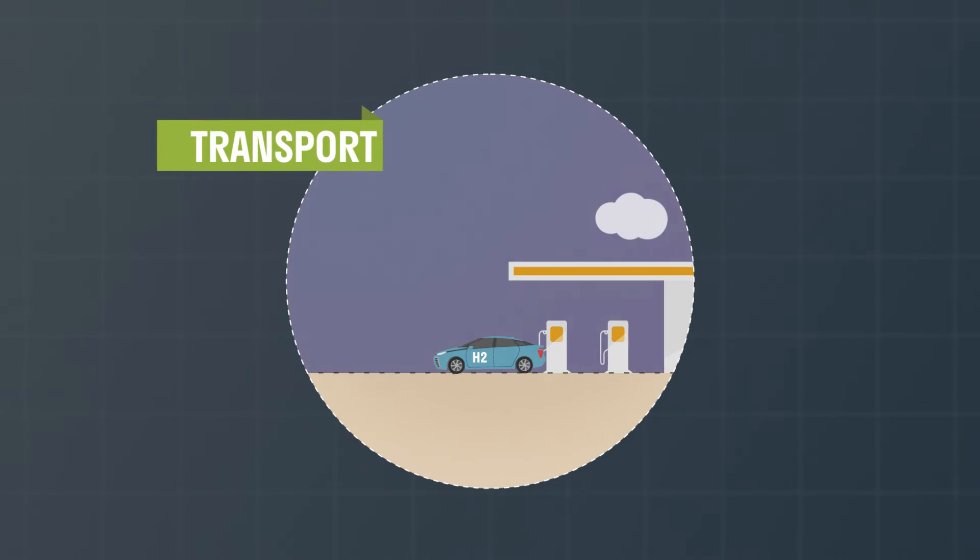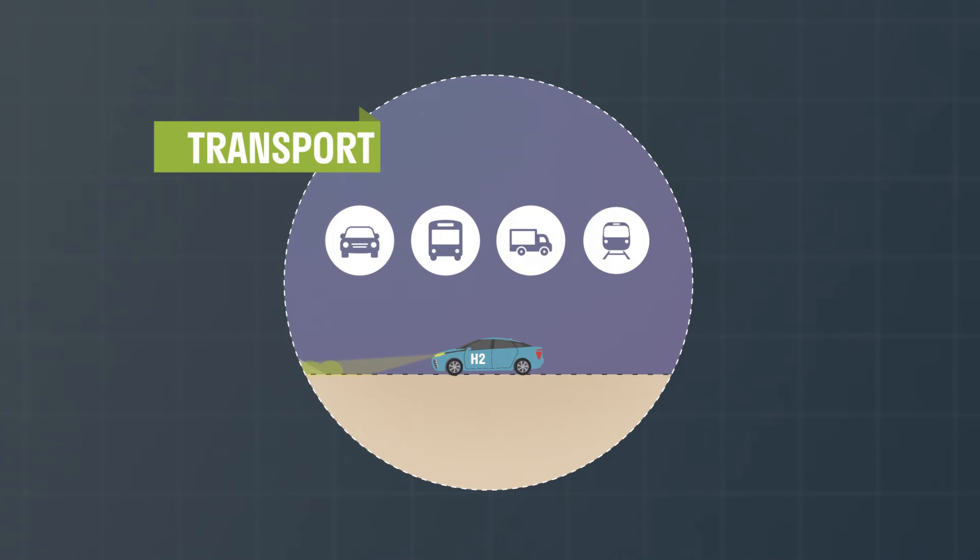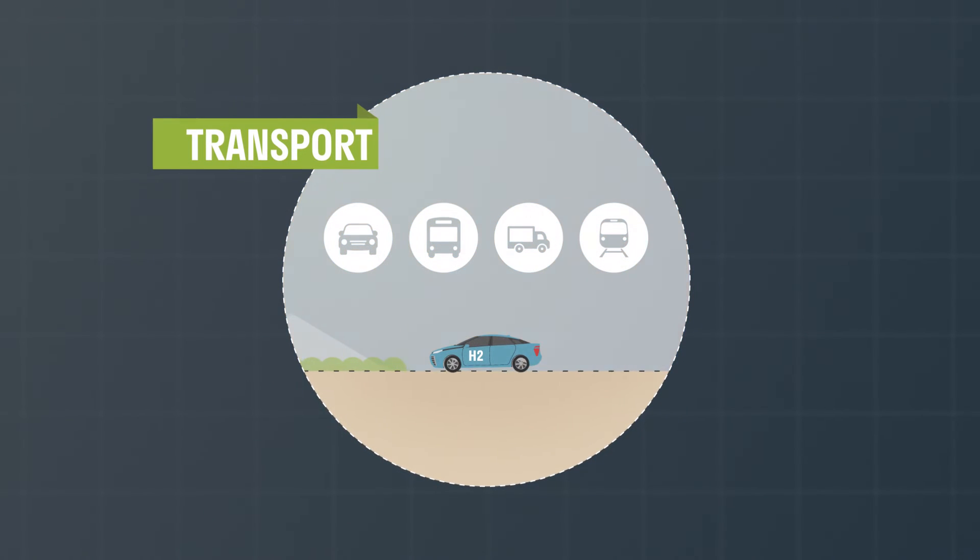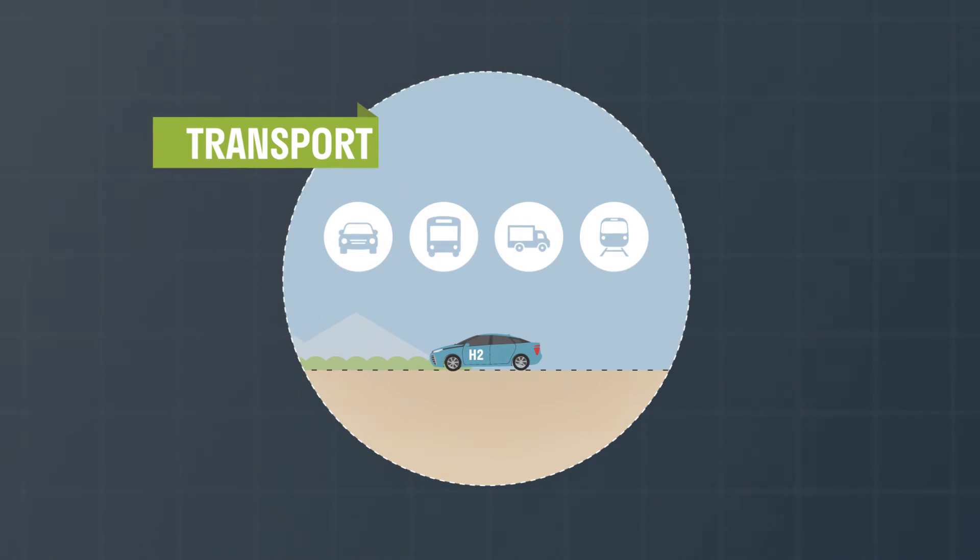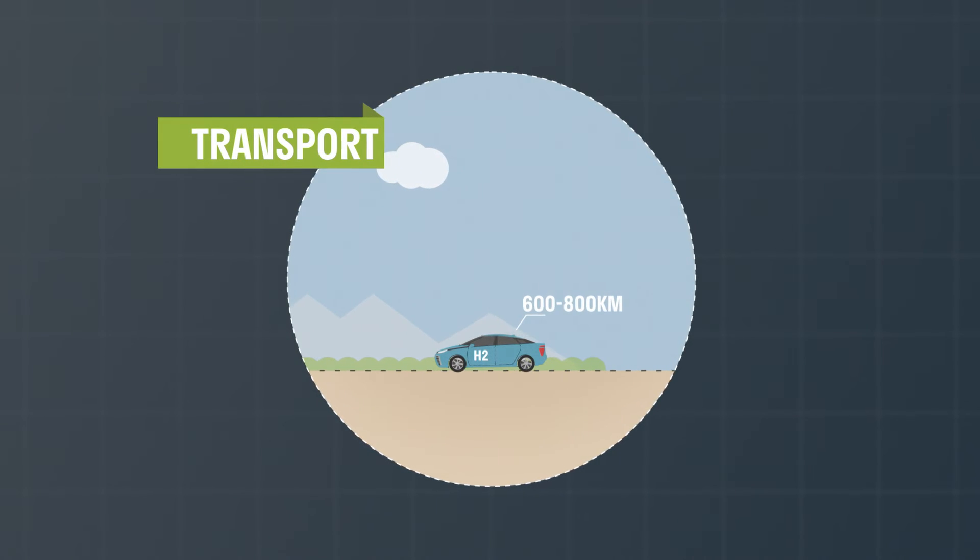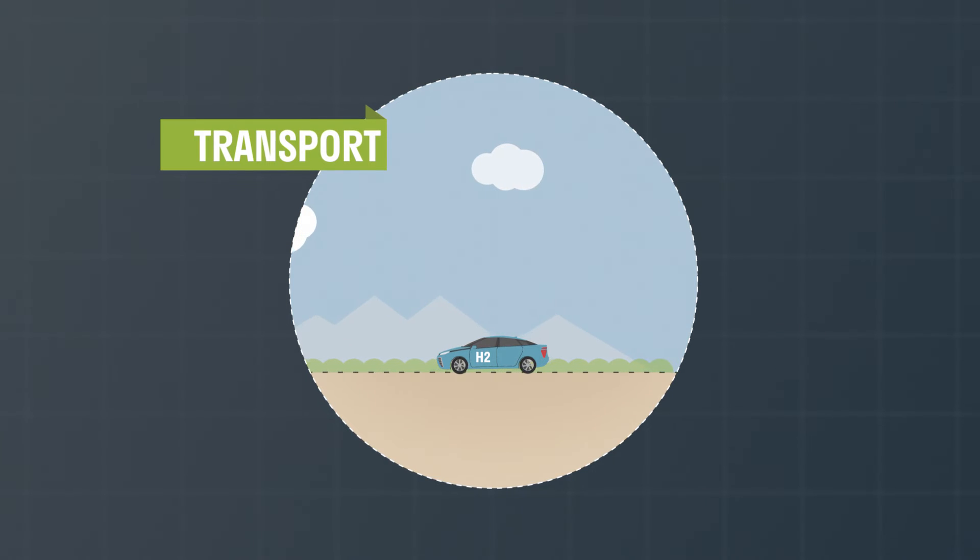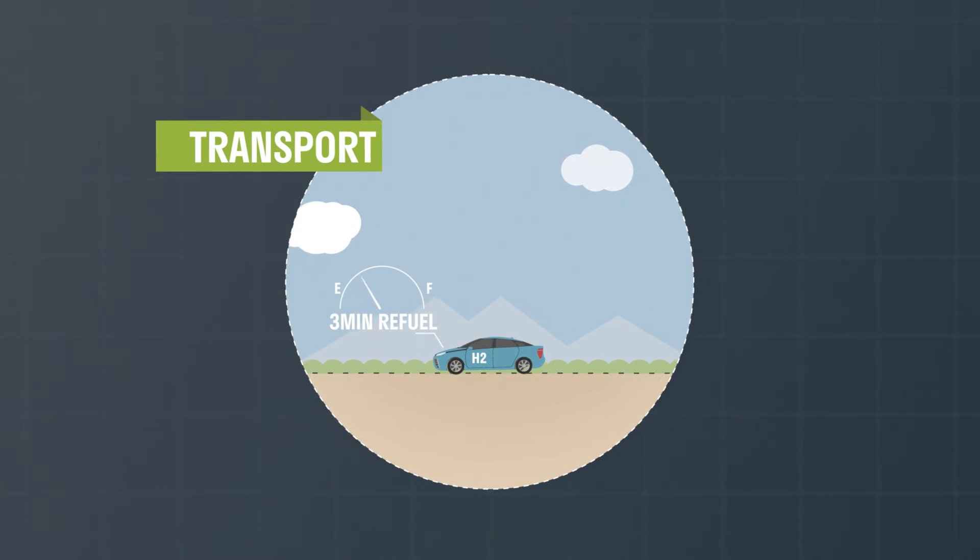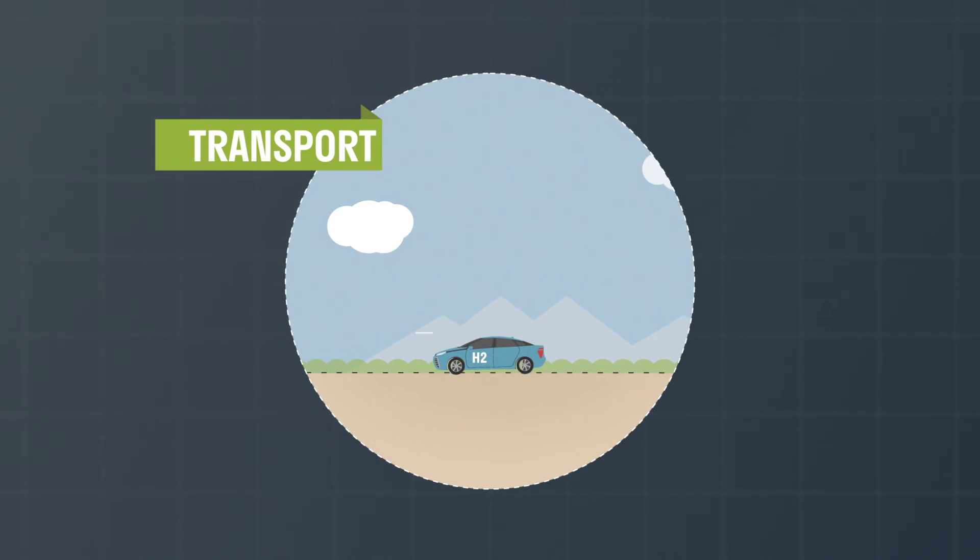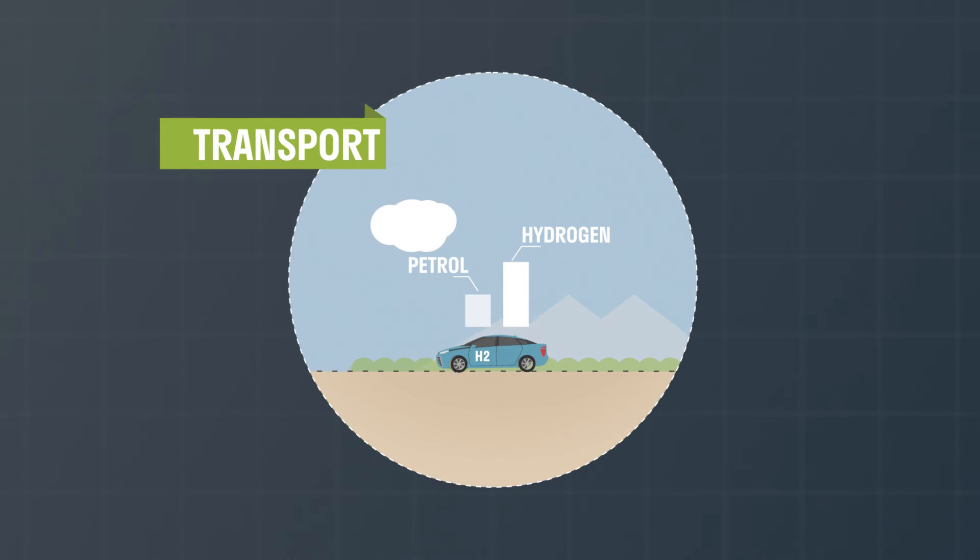Zero emission transport is possible in hydrogen powered cars, buses, trucks and trains. Hydrogen vehicles have a greater range than battery electric vehicles, between six to eight hundred kilometres for light vehicles. Refilling a hydrogen fuel cell vehicle takes around three minutes, and hydrogen vehicles are twice as efficient as petrol engines.